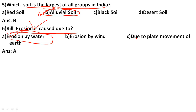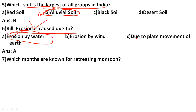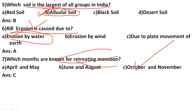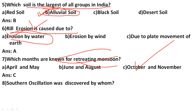Which months are known as the retreating monsoon months? The correct answer is option C, October and November are known for the retreating monsoon. During these months, the monsoon withdraws and there are climatic changes.